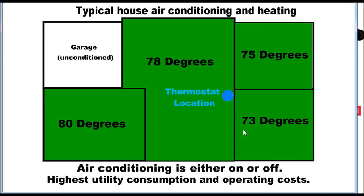Basically, you're looking at a three-bedroom home with four generalized areas that can be zoned, and each area has a different temperature. The whole purpose of putting in a zone system is partly to better control temperature and also to gain some efficiency attributes, because this current design is the highest utility consumption and operating costs with the least amount of comfort per each individual room or zone area.